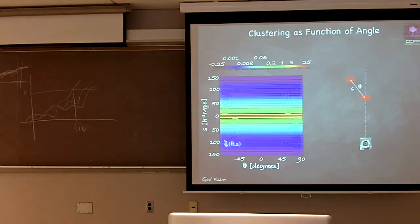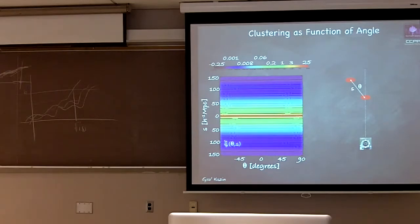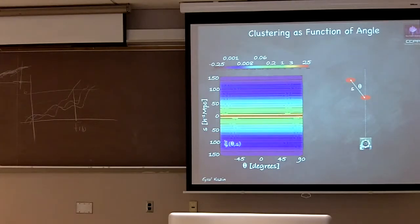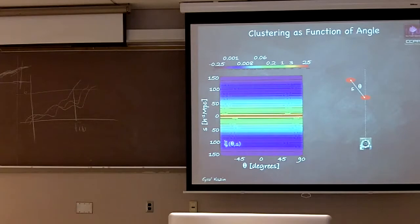I mentioned before the importance of measuring the baryonic acoustic feature both in the line of sight and perpendicular — meaning as a function of angle — but I've been averaging that out so far. Now I'll talk about the importance of the angle and how we can actually use that to test gravity on large scales. What you're looking at here is a contour plot of clustering taking the angle into account. The y-axis is the separation, the x-axis is the deviation from the line of sight. Here you have strong clustering going down logarithmically, and the line of sight is at theta equals zero.